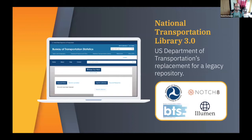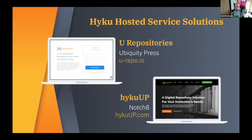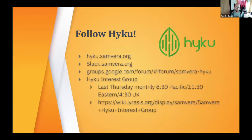Other projects in development for Haiku include the National Transportation Library with the Department of Transportation and Notch8, the Shared Research Repository — currently live — between the British Library and Ubiquity Press entering a new phase of work in 2021, and the Newman Numismatic Portal between Washington University St. Louis and Notch8. There are also hosted service solutions: Ubiquity Press has U Repositories and Notch8 offers Haiku Up. Follow Haiku at haiku.samvera.org, in the Samvera Slack channel, a Google group, and the last Thursday of every month is the Haiku interest group.